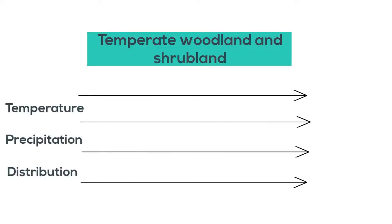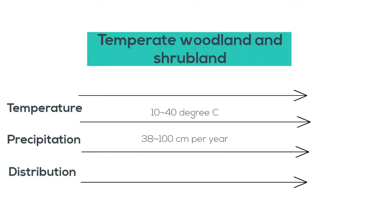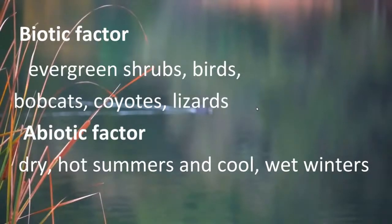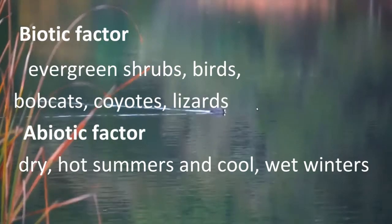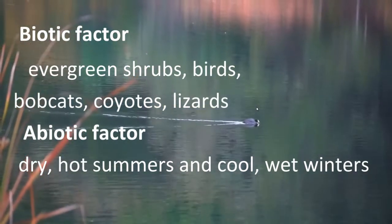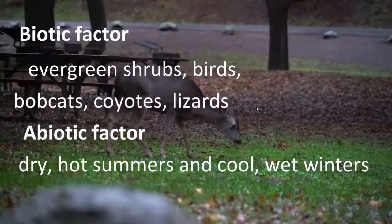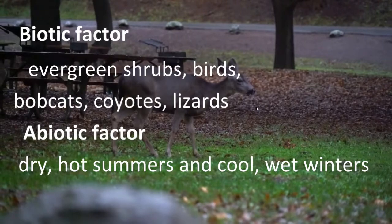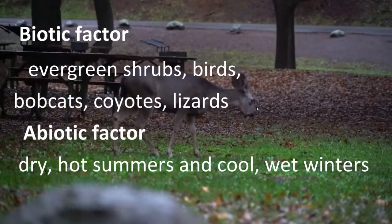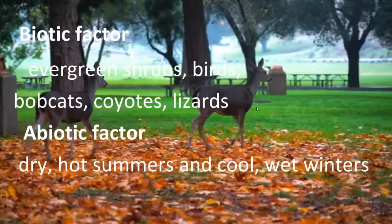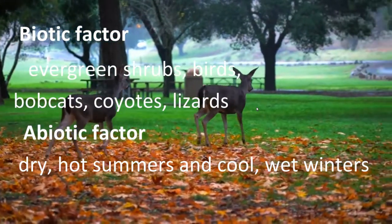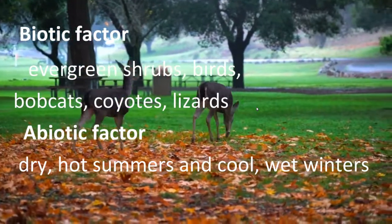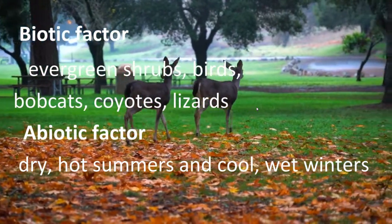Temperate woodland and shrubland. A mix of shrub communities are found in areas with less annual rainfall than in temperate forest. Its temperature ranges from 10 to 40 degrees Celsius. Its biotic factor includes evergreen shrubs, birds, bobcats, coyotes, and lizards. Its abiotic factor includes dry, hot summers and cool, wet winters.